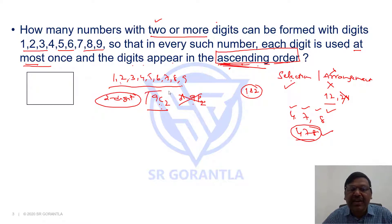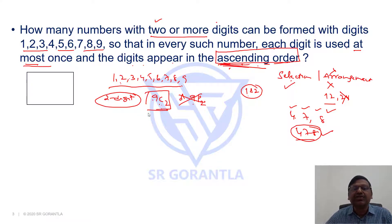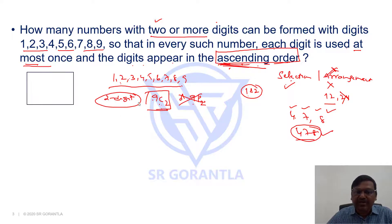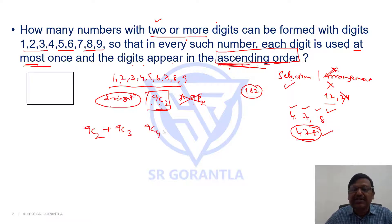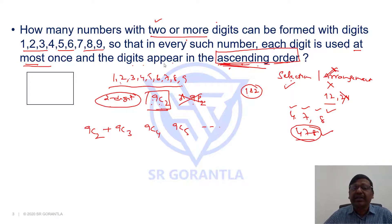Hence it is not 9P2, it is only 9C2. Out of nine digits we select any two — 9C2 possibilities, selection only, not arrangement. The question asks for two or more digits, so we also count three-digit numbers (9C3), four-digit numbers (9C4), five-digit numbers (9C5), and so on.